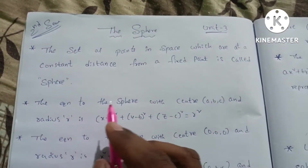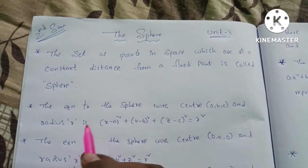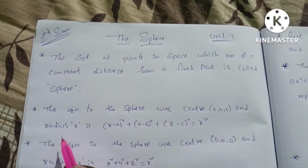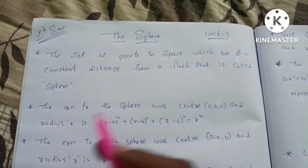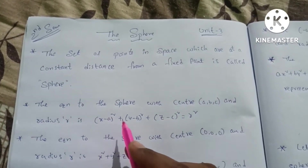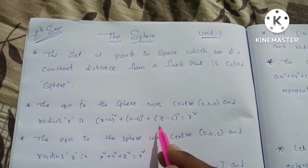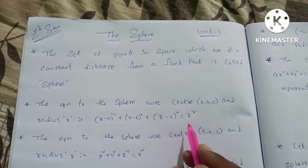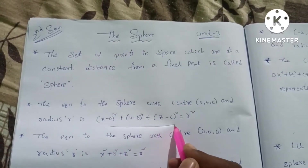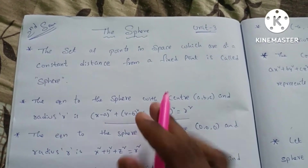The first equation is the sphere with center (a, b, c) and radius r. If we have a center and radius, we will use the sphere equation: (x minus a) whole square plus (y minus b) whole square plus (z minus c) whole square is equal to r square.